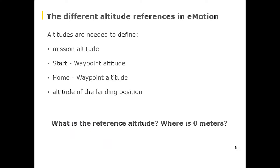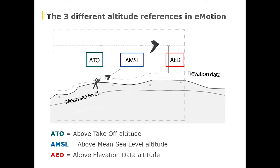In eMotion we use three different types of altitude references. Depending on what we want to do, we use one or the other. They are mainly used to define mission altitudes, start waypoint altitude, home waypoint altitude, or the altitude of the landing position. What we use in which situation can depend on how simple or complex the environment is that you're flying in.